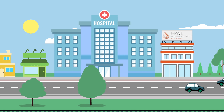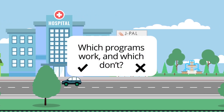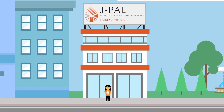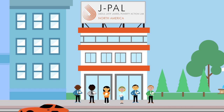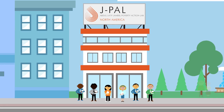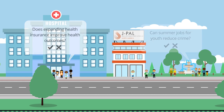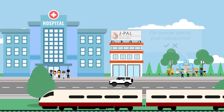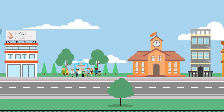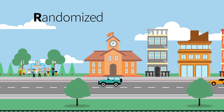People who operate programs to reduce poverty are constantly facing the same question: which programs work and which don't? At J-PAL North America, we work with academic researchers and partner organizations to break these big issues down into specific, testable questions — such as, does expanding health insurance improve health outcomes? Can summer jobs for youth reduce crime? To evaluate the effectiveness of various programs designed to reduce poverty, we use a method called a randomized controlled trial.